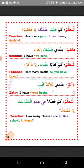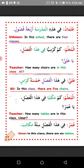Thalathatu kutubin — three books, not thalathu. Al-muallim — Teacher: Kam faslan fi hathihi al-madrasa? How many classrooms are there in this school, ya Uthman? Answer: Fi hathihi al-madrasa arba'atu fusulin — there are four classes in this school.